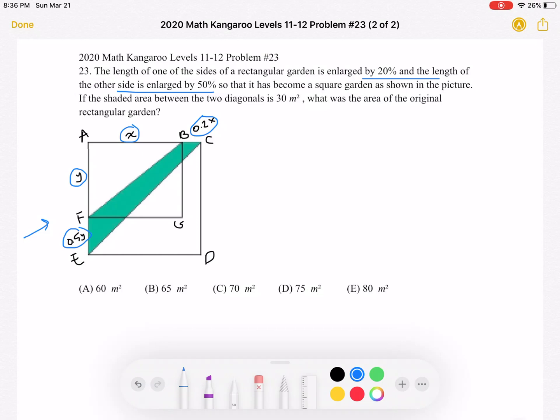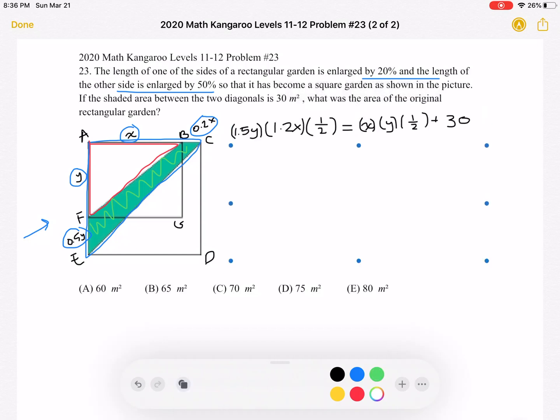So one way we can do that is we have the area of triangle AEC. We know the area of that triangle is equal to the area of triangle AFB plus this green shaded area, which we know is 30. So we can set up an equation, because we know the area of that triangle AEC is equal to base times height over 2.